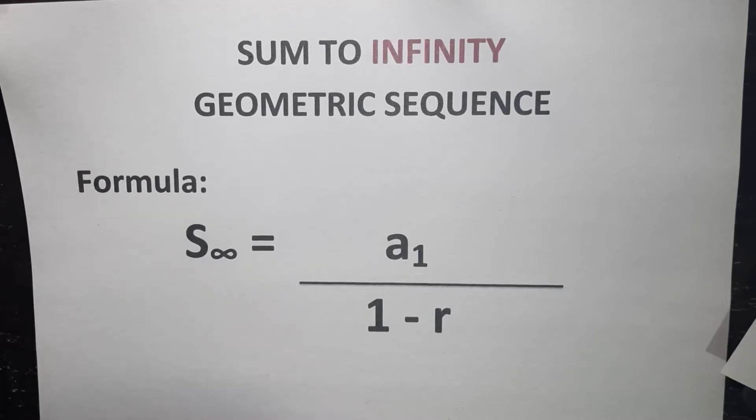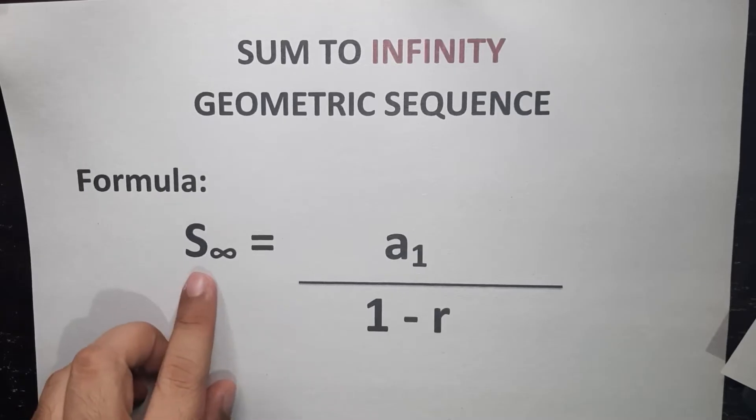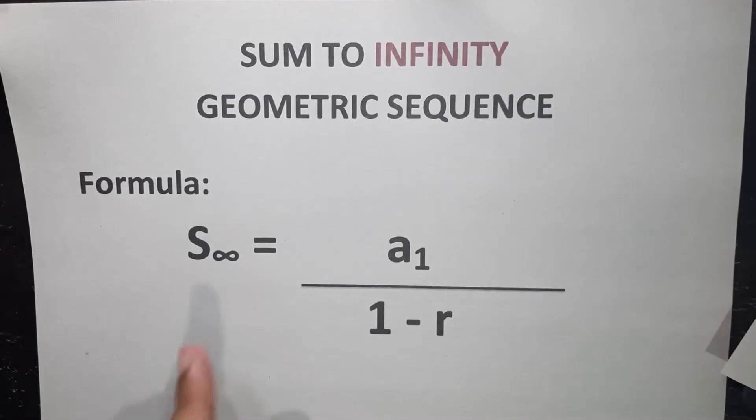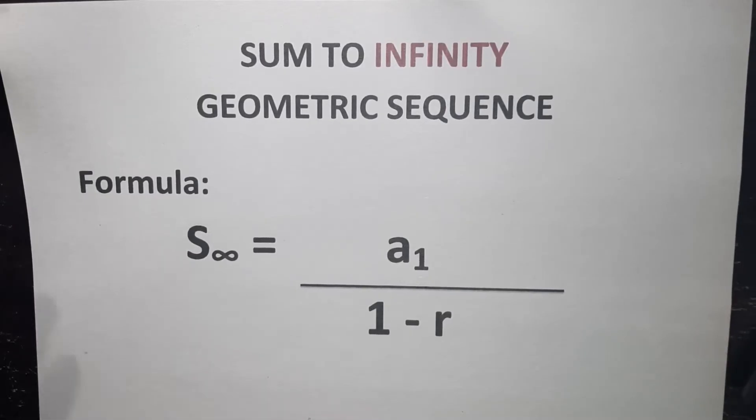Now, our formula for the sum to infinity of geometric sequence is S∞, this is the symbol for infinity, is equal to a₁, which refers to the first term of the sequence, divided by 1 minus r, or the common ratio. The formula looks very simple, but there are many conditions that need to be applied to the common ratio.